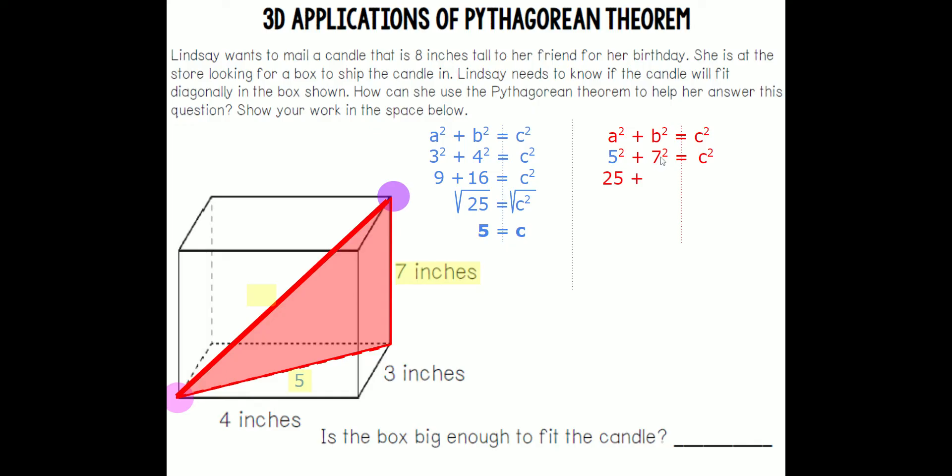Five squared is 25. Seven squared is 49. C squared is still C squared. You're going to add up both of those. You get 74 equals C squared. Square root, and we find out that C equals roughly 8.6 inches.